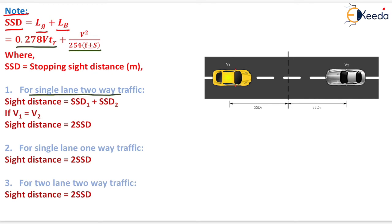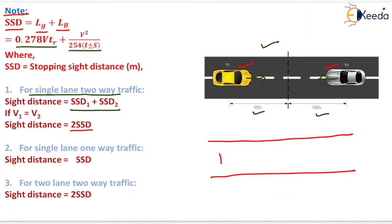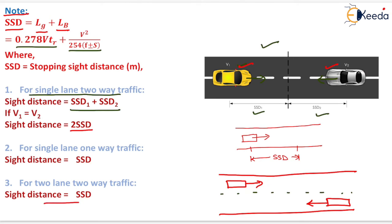For single lane two-way traffic, the sight distance equals SSD1 + SSD2, because one vehicle is approaching from each direction. If V1 = V2, it equals 2 × SSD. For single lane one-way traffic, the sight distance equals only SSD. For two-lane two-way traffic, the sight distance equals SSD, because each lane carries traffic in only one direction.